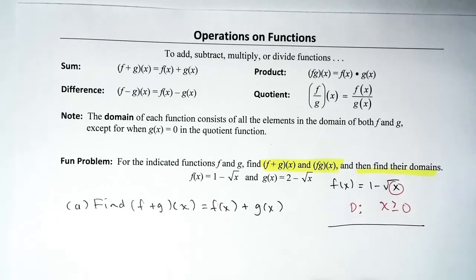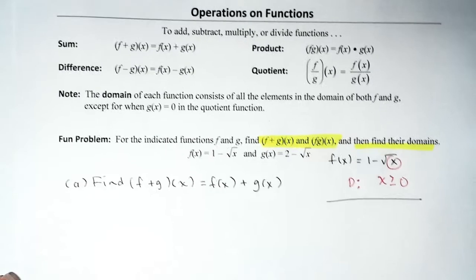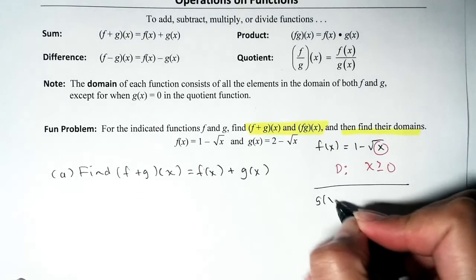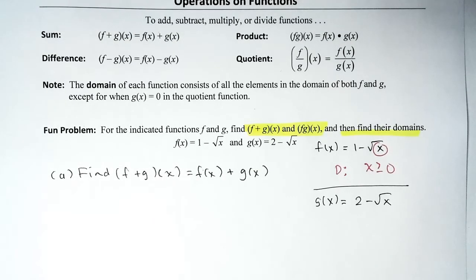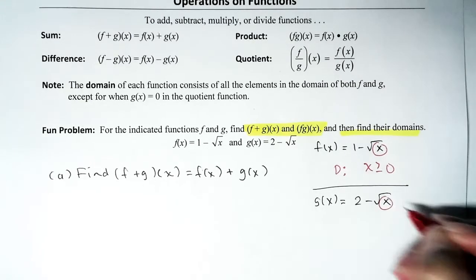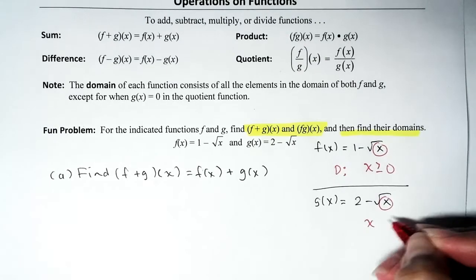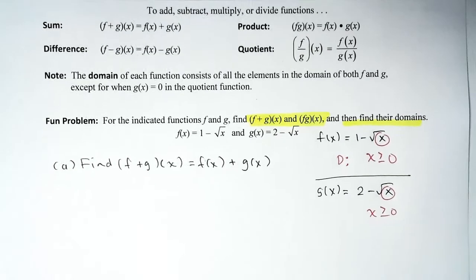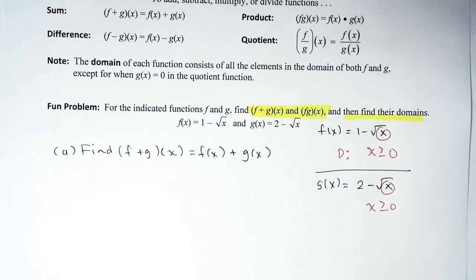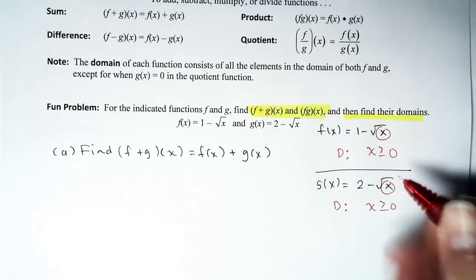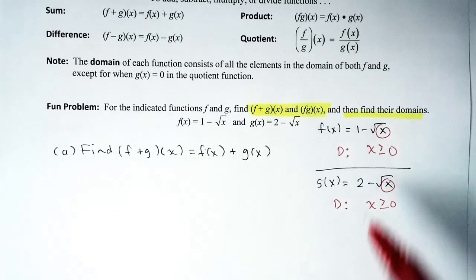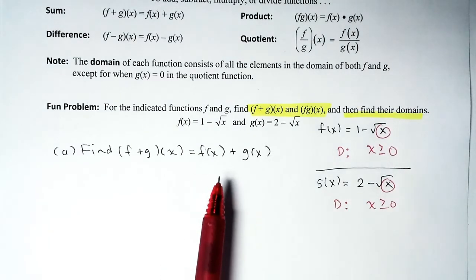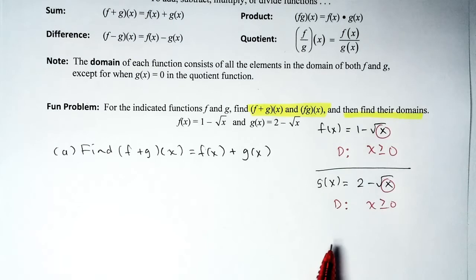What about the domain of function g? g of x equals 2 minus square root of x. There is a radical with even root, so same idea — we need to make sure the radicand is not negative, meaning x has to be greater than or equal to 0. So the domain of both f and g is all real numbers that are at least 0. When we add the functions, we need to respect those domains.